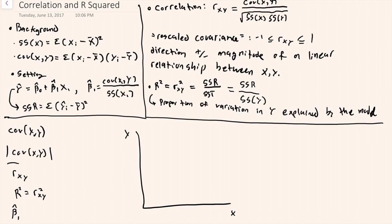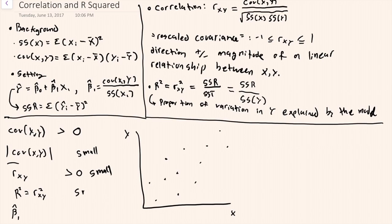Next, we can consider a situation where x and y are loosely positively correlated. Here the covariance would be greater than zero, and the magnitude of the covariance would be relatively small. R would also be greater than zero and relatively small. R-squared would also be relatively small. And the slope coefficient would be greater than zero.